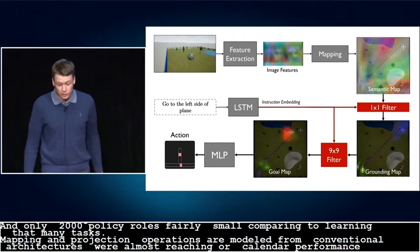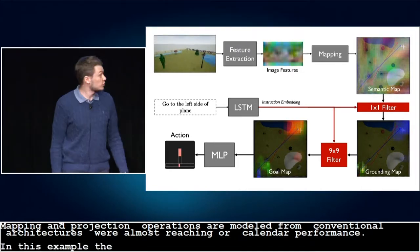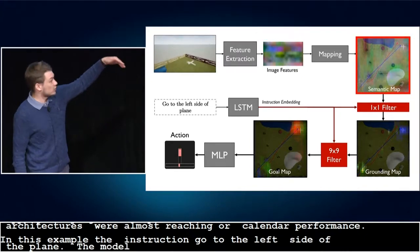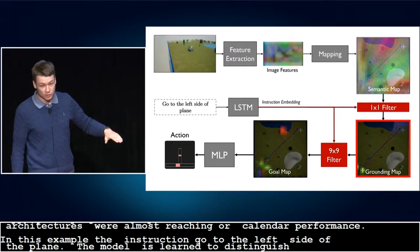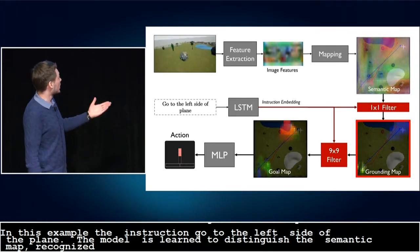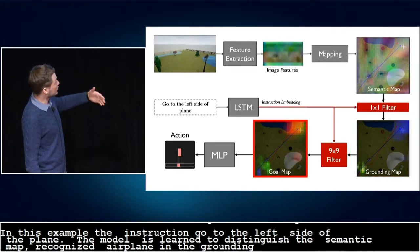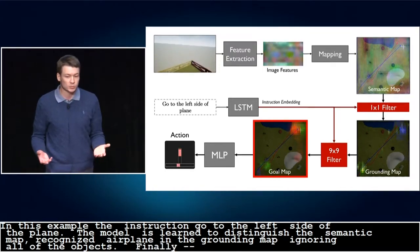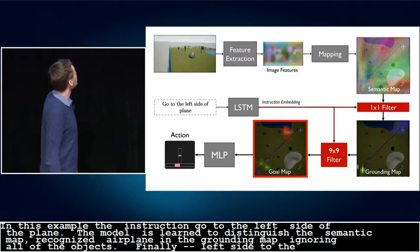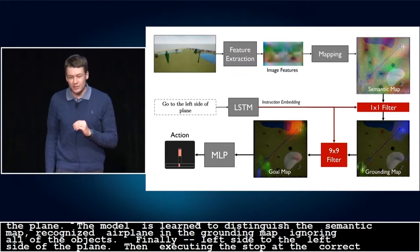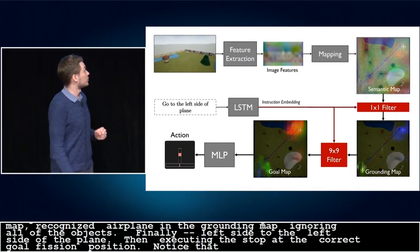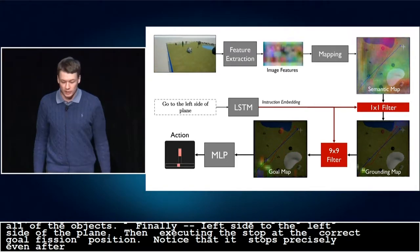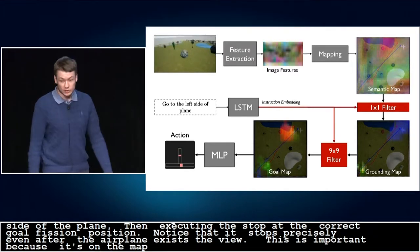In this example, our model is executing the instruction go to the left side of the plane. The model has learned to distinguish the various objects in the semantic map. It has then recognized the airplane in the grounding map while ignoring all other objects. Finally, in the goal map, the model has resolved the spatial relation left side to the left side of the plane. Then the model executes, bringing the quadcopter to a stop at the correct goal position. Notice that the quadcopter stops precisely even after the airplane has exited its field of view. This is possible because of the reasoning on the map and not on the first-person observations. Thank you. We'll be happy to provide more details at the poster session.